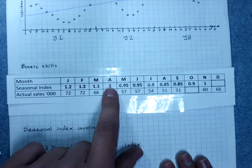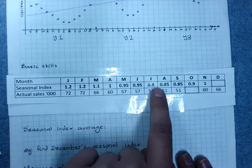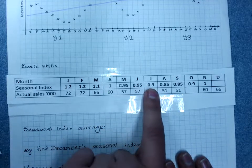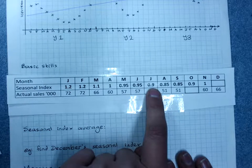April with a seasonal index of one is on the monthly average, and July with a seasonal index of point nine is point one or ten percent below the monthly average.